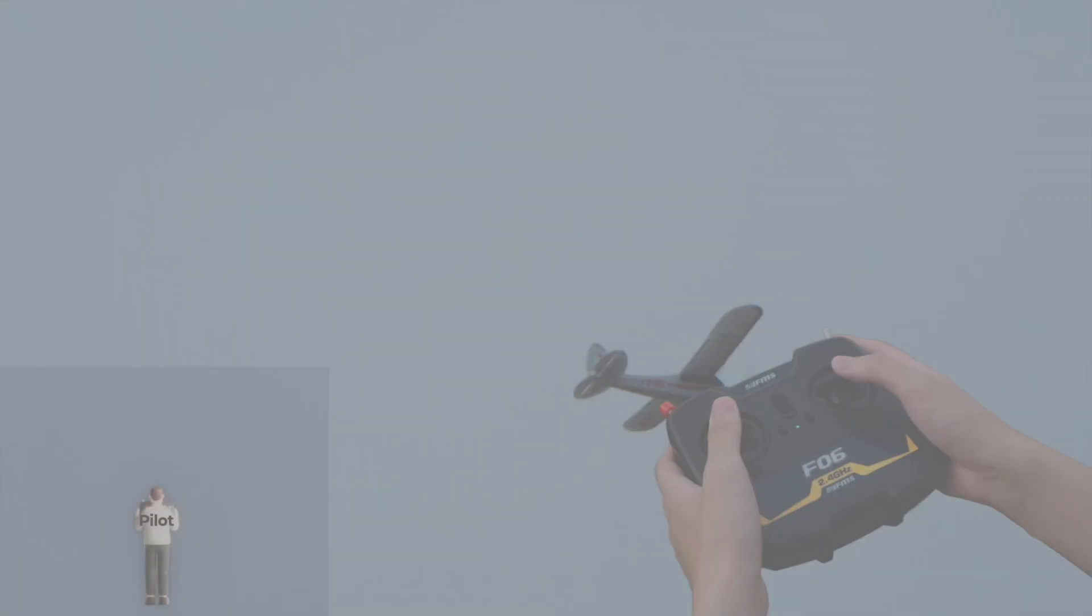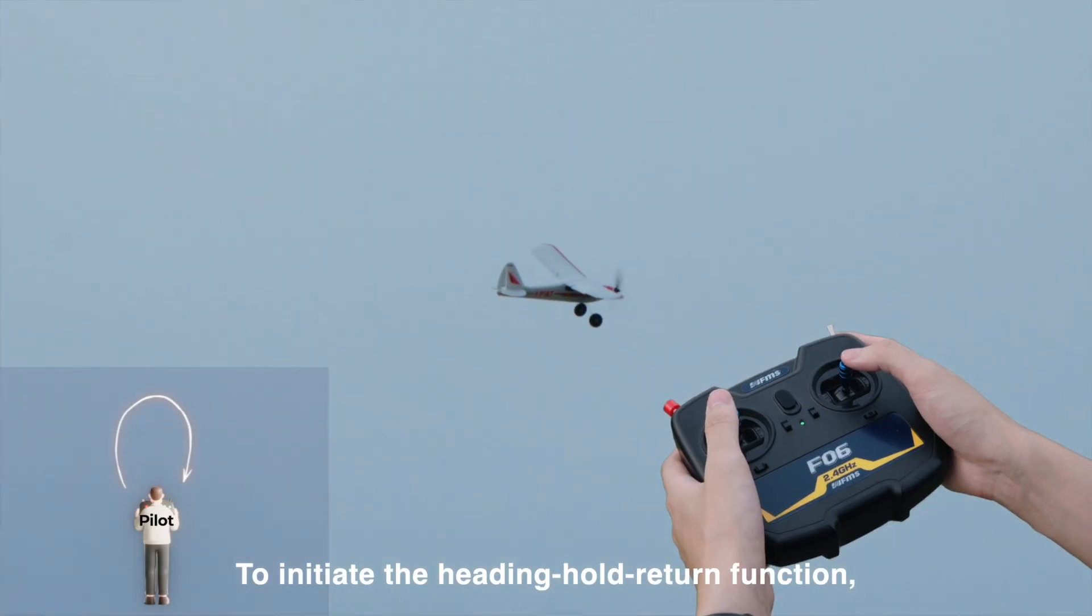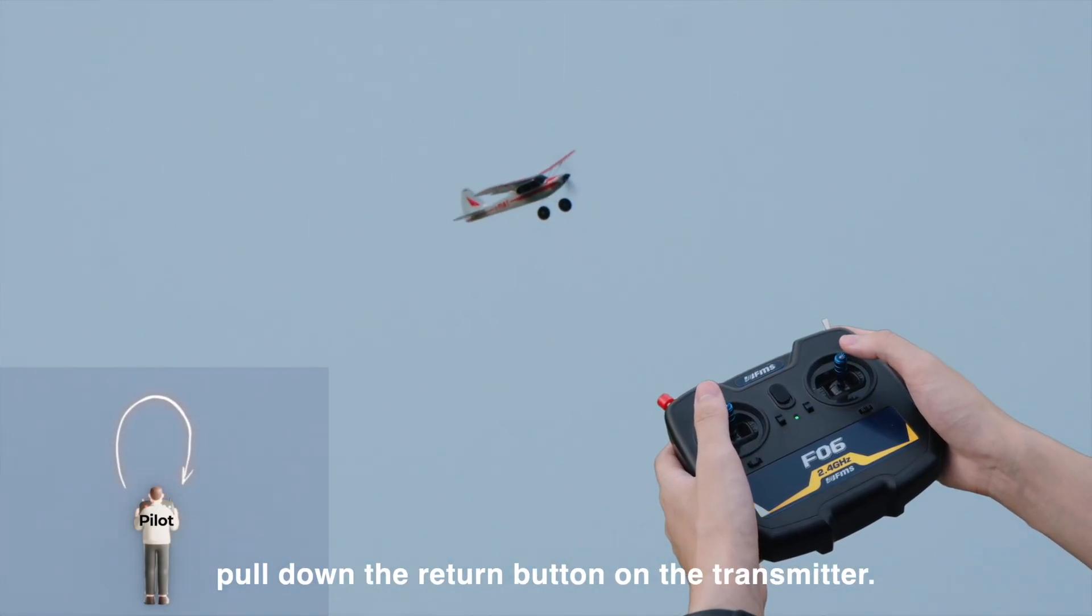To initiate the Heading Hold Return function, pull down the Return button on the transmitter.